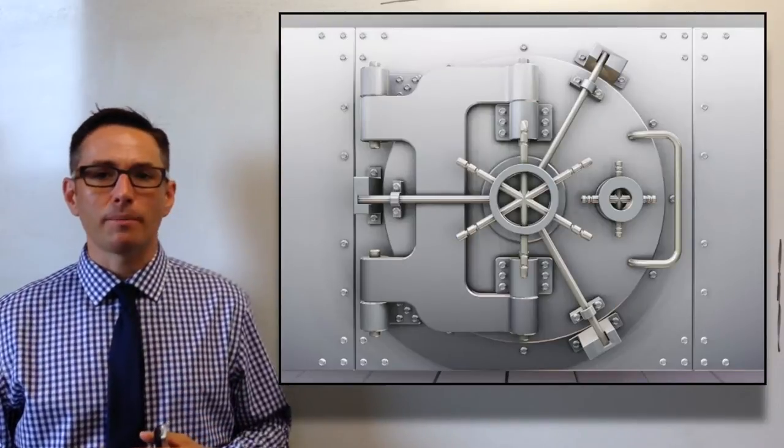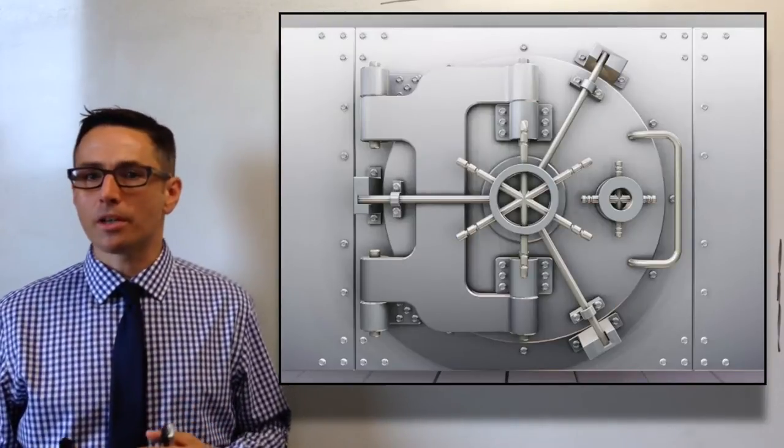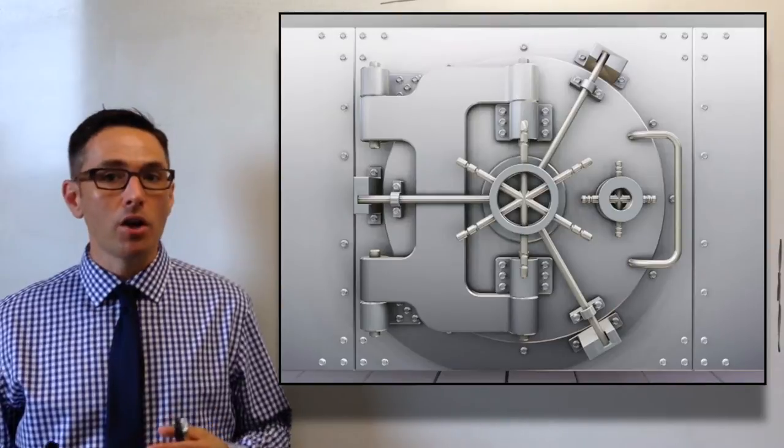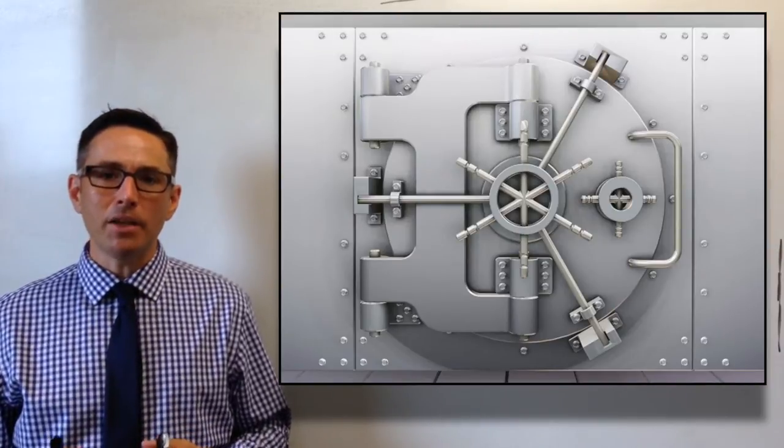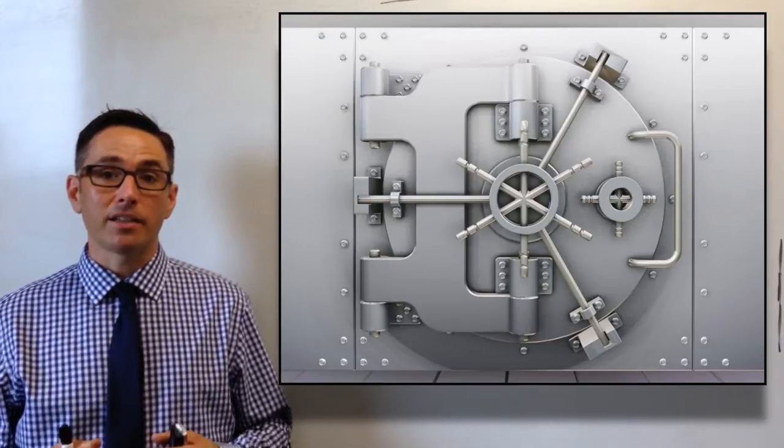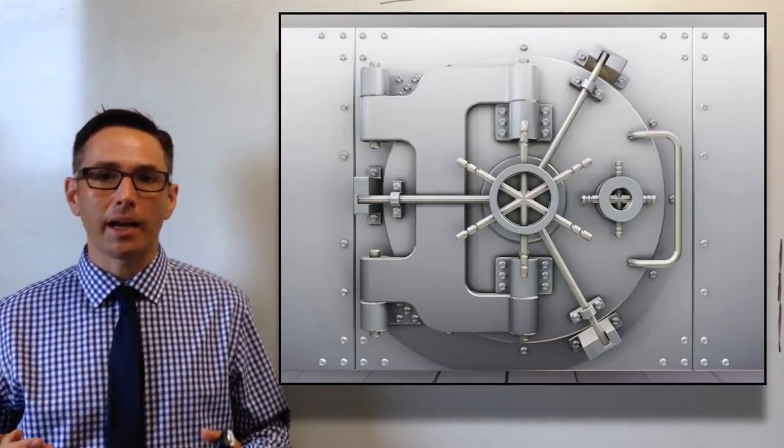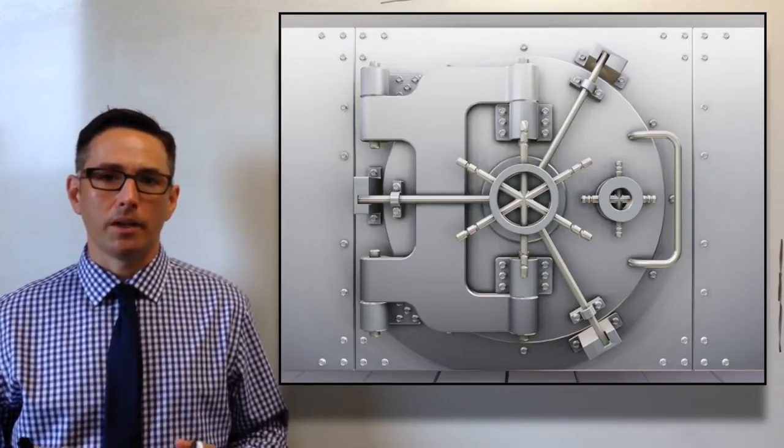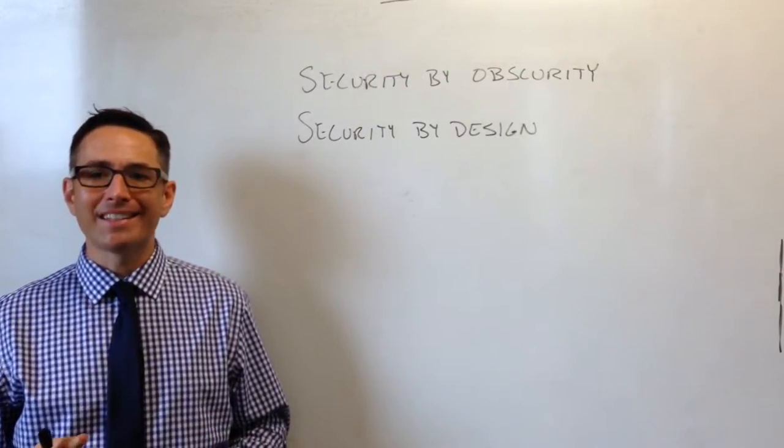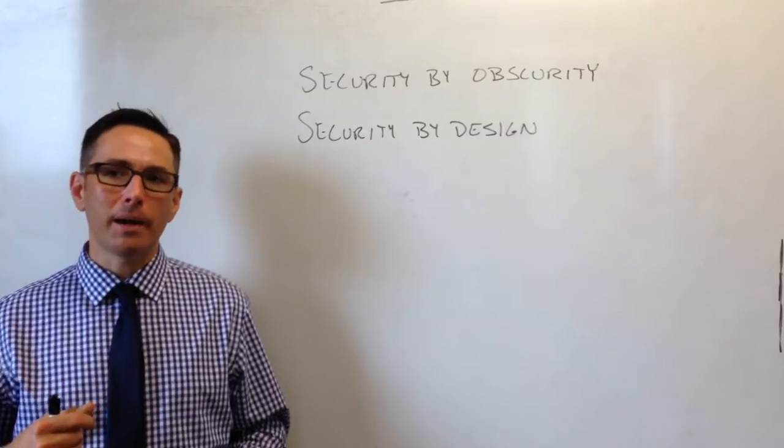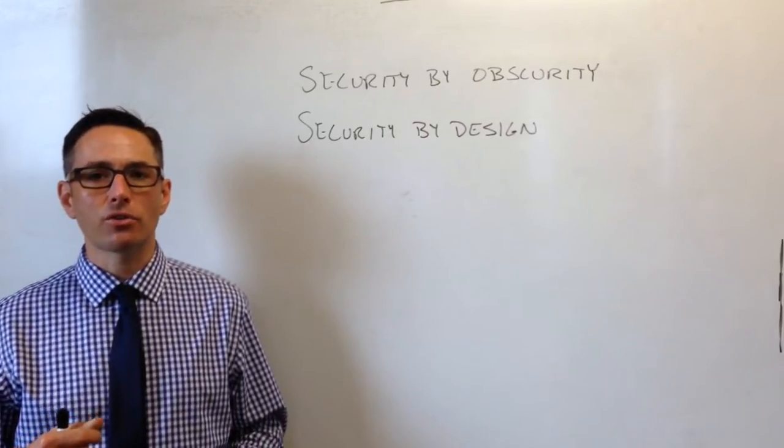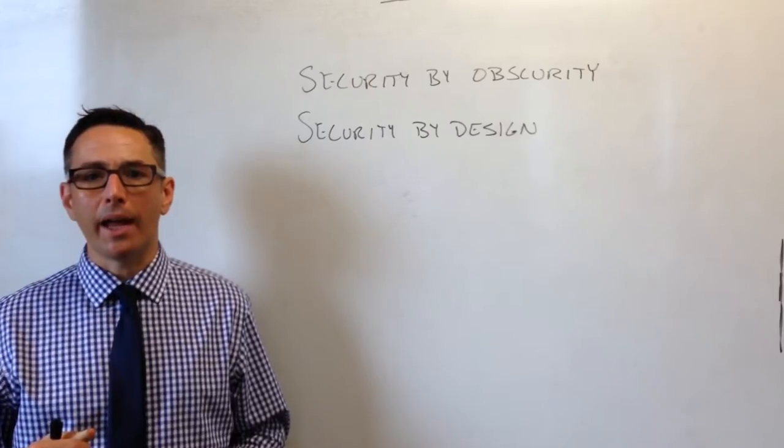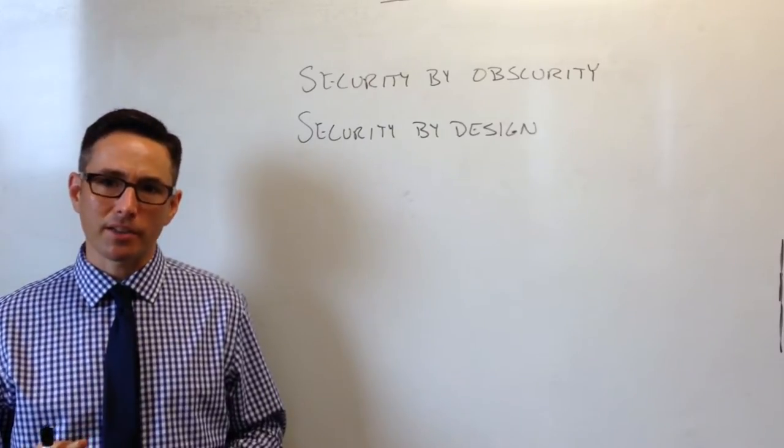This is different from security through obscurity because there's no question about where the money is. Everyone knows that the money is in the bank vault. What's keeping your money safe is not the fact that no one knows where it is, but the fact that the security mechanisms around the money are very strong and able to withstand any kind of attack. In computational systems, security by design is considered a much stronger, much more reliable way to develop computational systems.